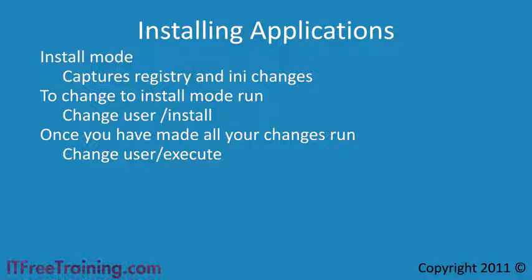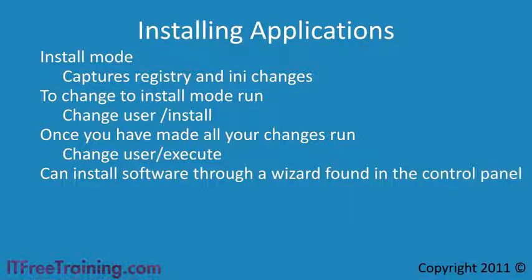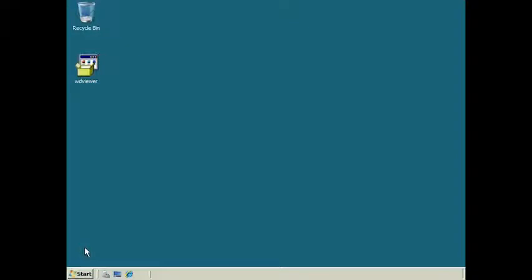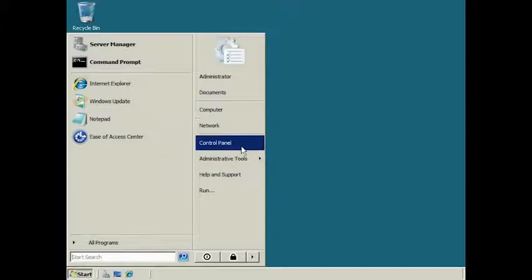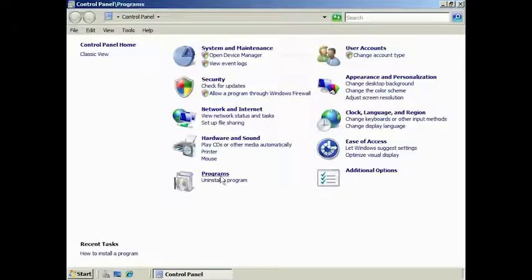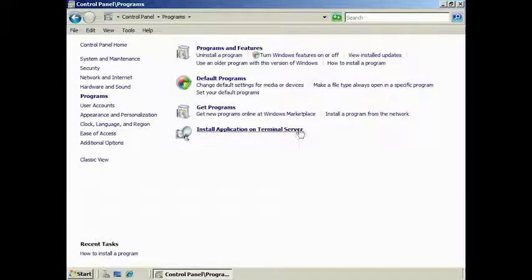If you don't want to do it from the command prompt, Windows also provides a wizard to make the process of installing software easier. The wizard is found in the control panel and is called Install Application on Terminal Server. Open the control panel and select Programs. From here, you can see the option Install Application on Terminal Server.